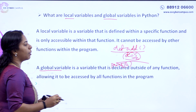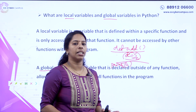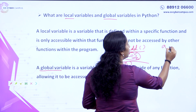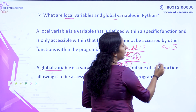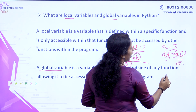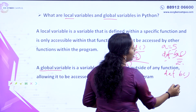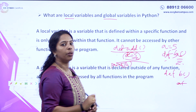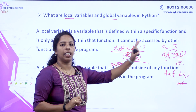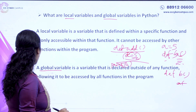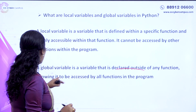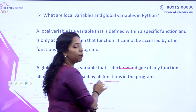What is the global variable? We have defined a global variable in a program and all the functions can access that variable. We have a value called a = 5 and we have to initialize the global variable. A global variable is a variable that is declared outside of any function.